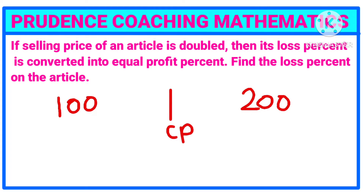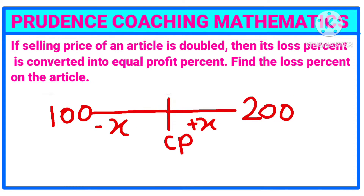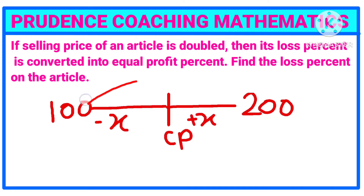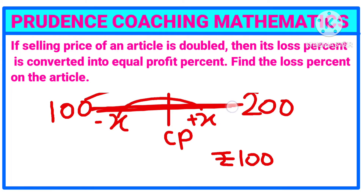If the selling price is doubled, the loss percentage converts into an equal profit percentage. So if the loss percentage was x previously, now it becomes x percentage of profit. The difference between the two selling prices is 200 minus 100, which equals 100 rupees. This difference covers plus x and minus x, meaning a total distance of 2x.